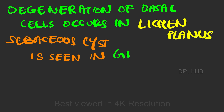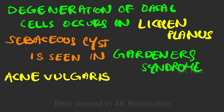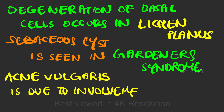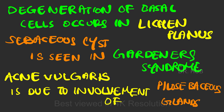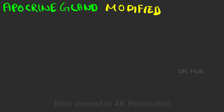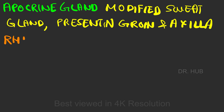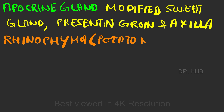Acne vulgaris is due to the involvement of the pilosebaceous glands. The apocrine gland is a modified sweat gland present in the groin and axilla.